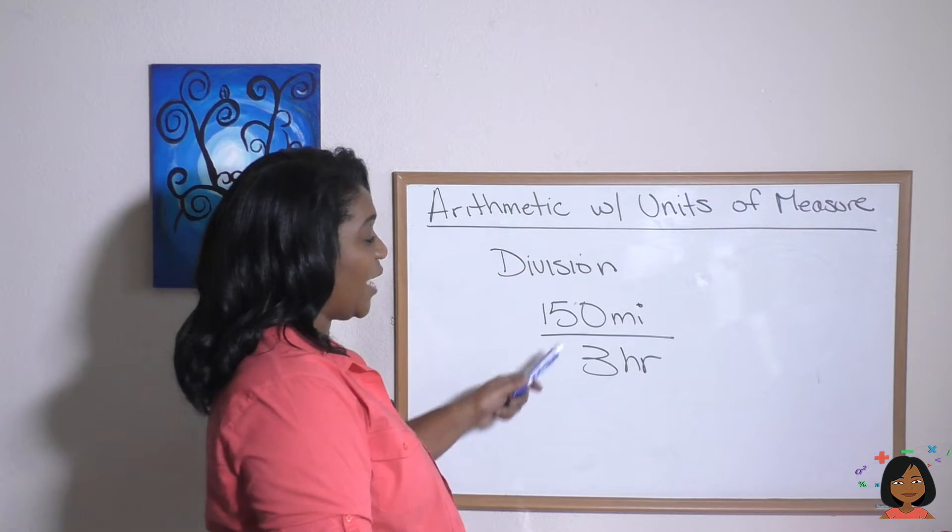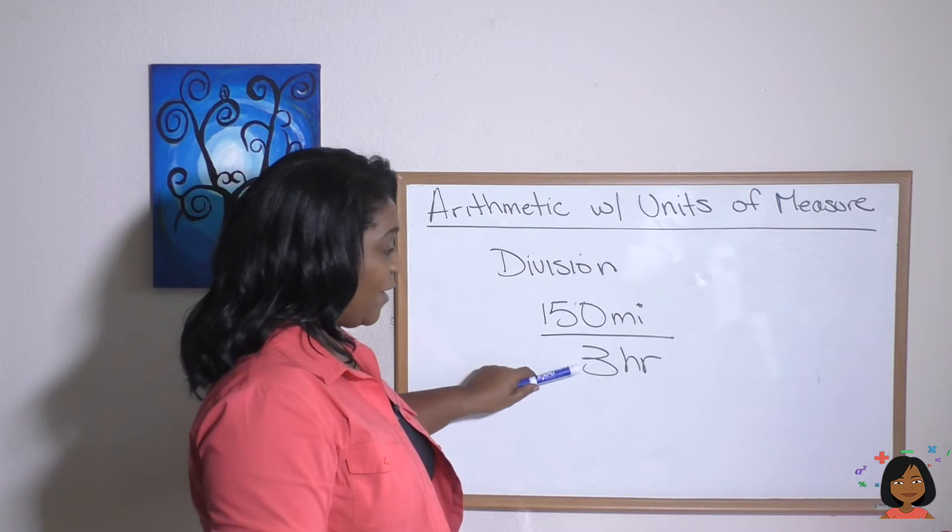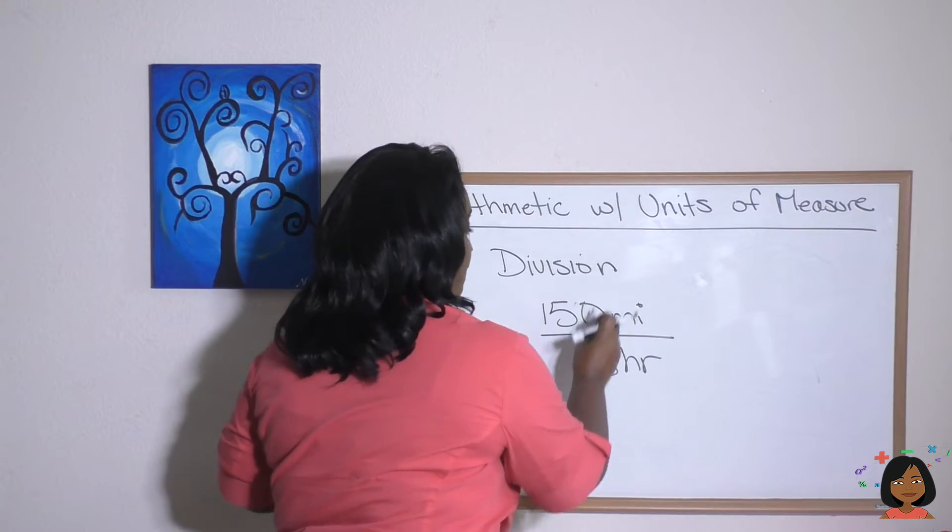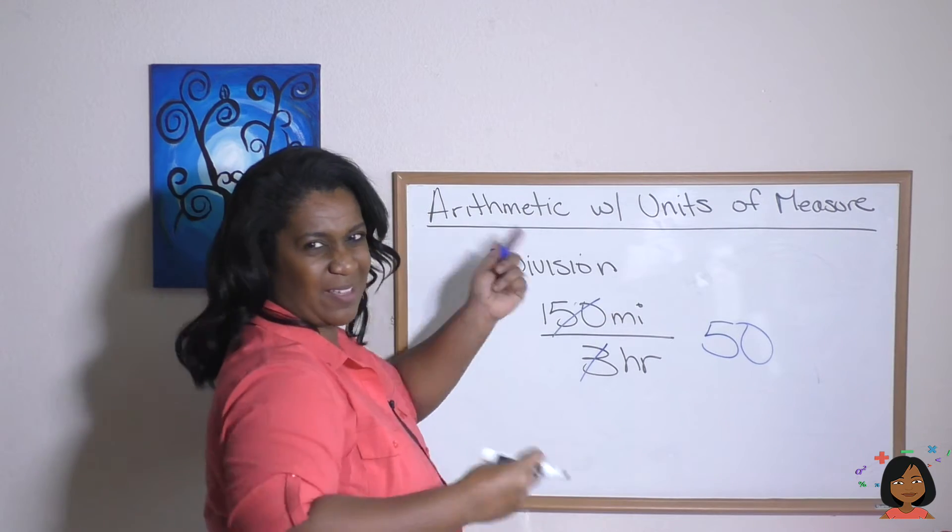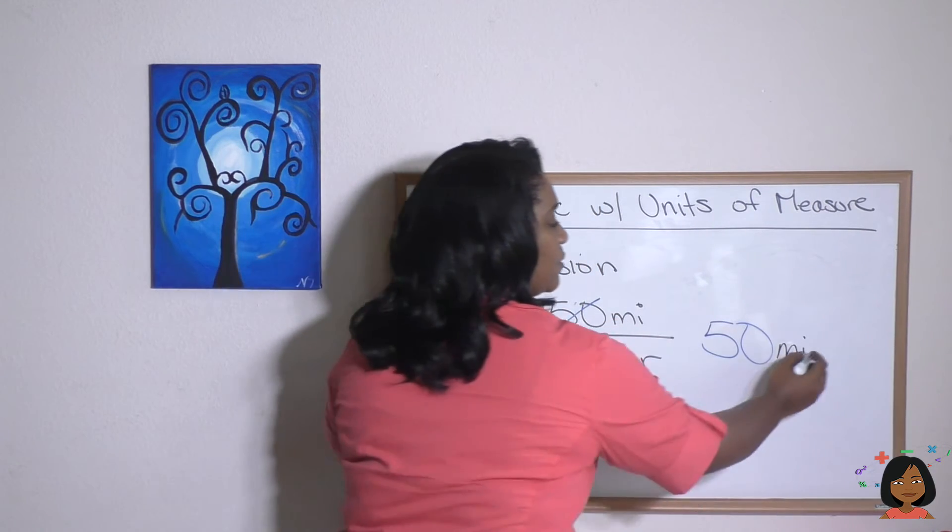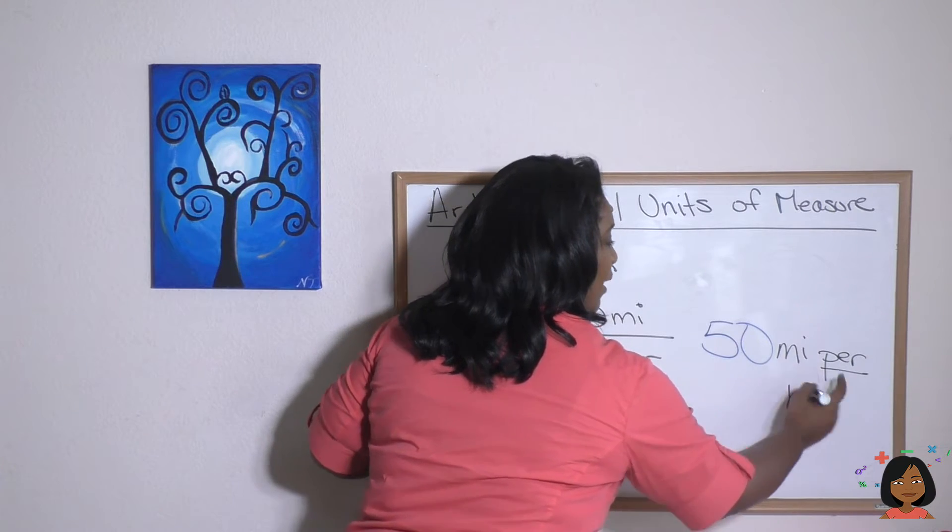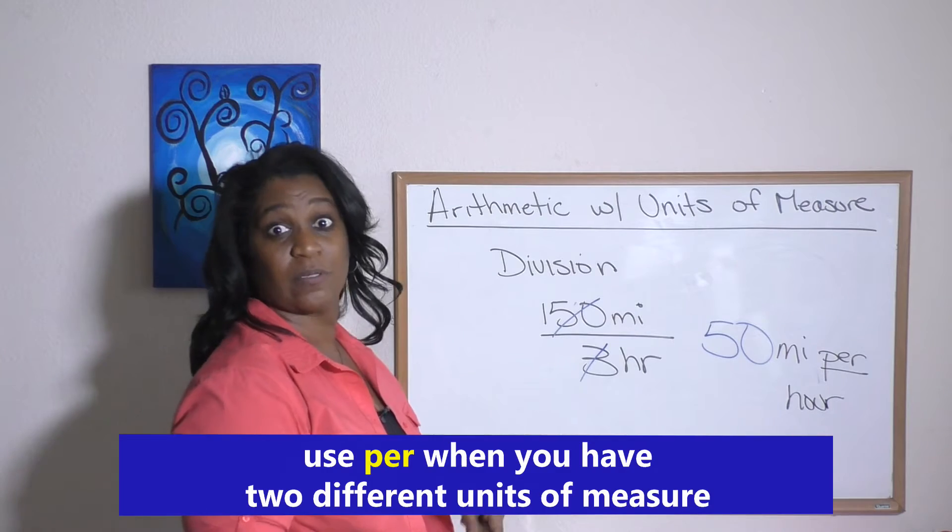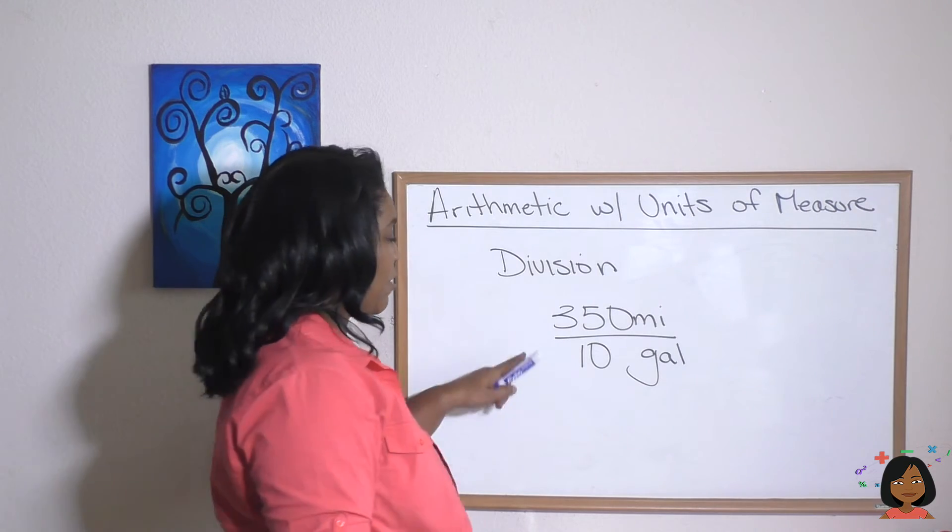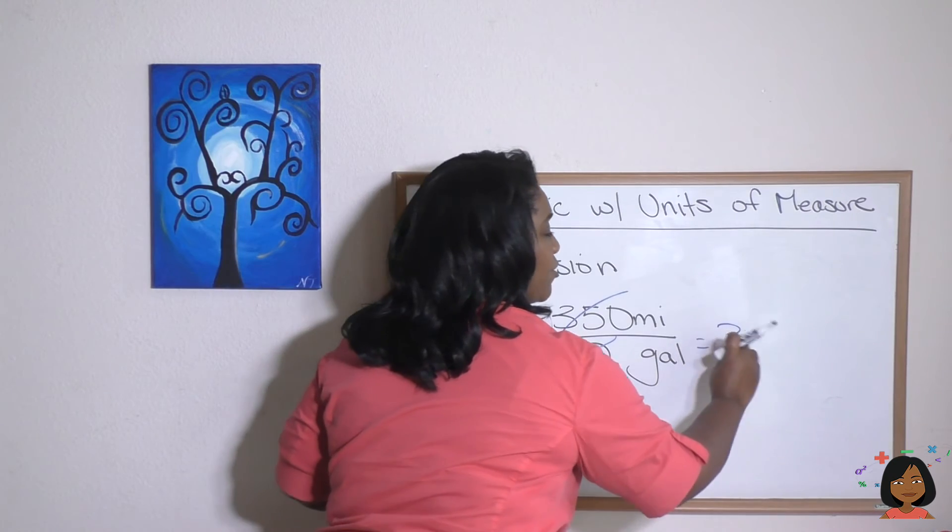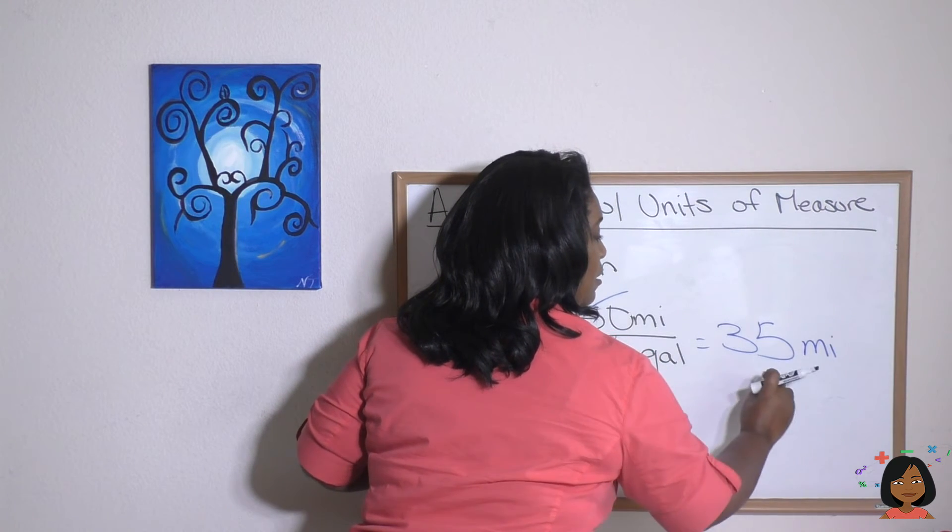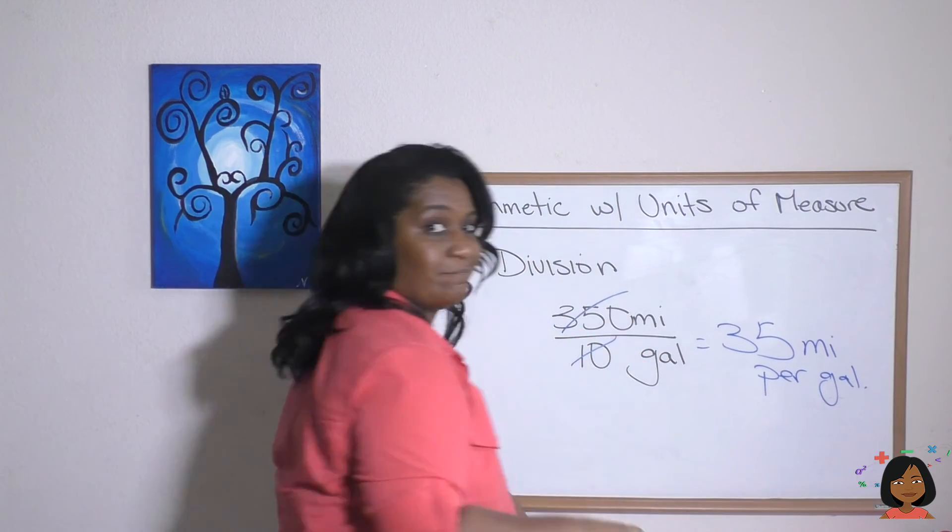Now what happens when we do not have the same label on the top and the bottom? Well, we can definitely do the math part, right? The arithmetic part, 150 divided by three. We know that's going to be 50. But I can't just cross out the miles in the hour. So how I write this is I write 50. I start with the first one, miles per hour. So I insert the word per in between miles and hour. Try it with this example, 350 miles per 10 gallons. Do the arithmetic first. We know 10 goes into 350 35 times, but we have different labels here. So we're going to do our miles per gallon.